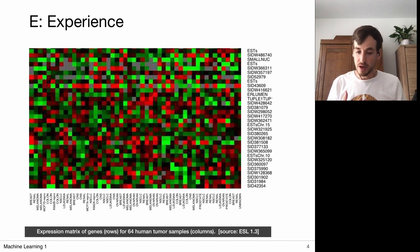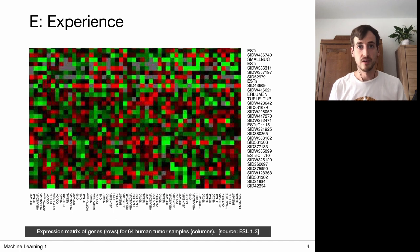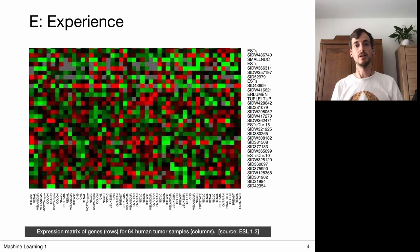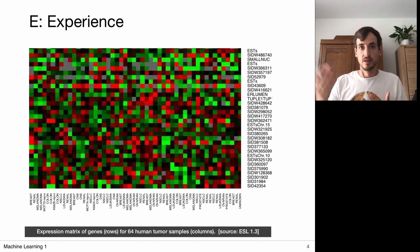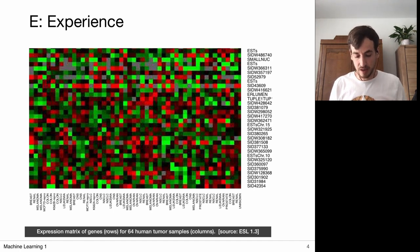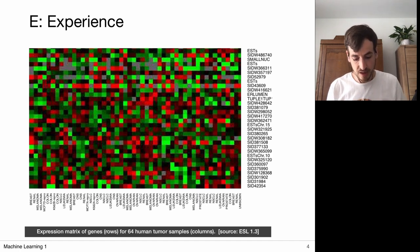Now we're considering a different task — the analysis of tumors. Why is this relevant? There are many types of tumors: some are benign, some are malignant and very harmful, and we want to treat them as soon as possible. Sometimes it's not easy to determine from a medical image scan what type of tumor it is. There is actually a way to determine the tumor type more accurately, and that's by looking at the expression of certain genes. What we're looking at here is an expression matrix of genes.